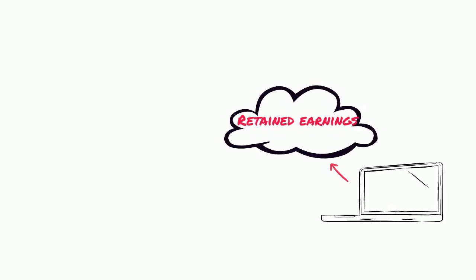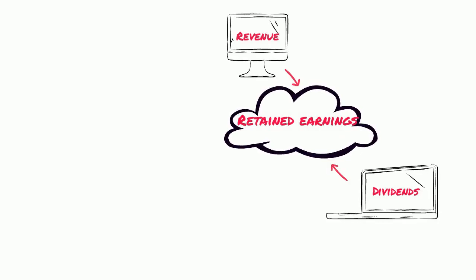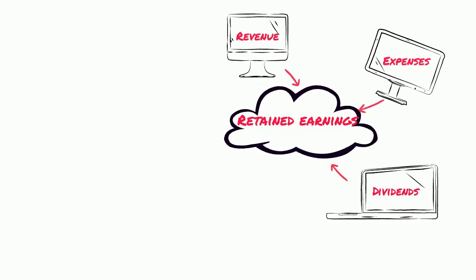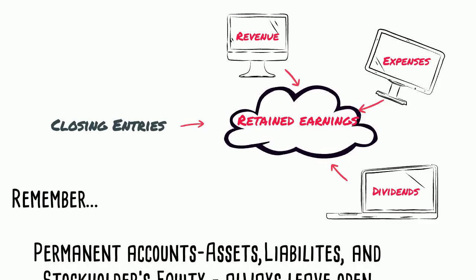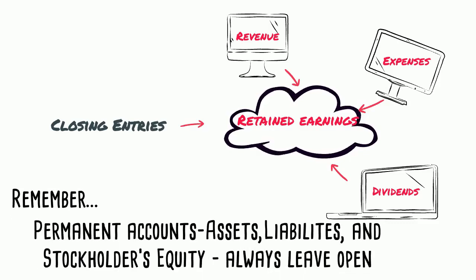You may be asking yourself: if I've closed revenue, expenses, and dividends, what happens to my assets, liabilities, and stockholders' equity? Well, remember, these are permanent accounts, so we will always leave them open.